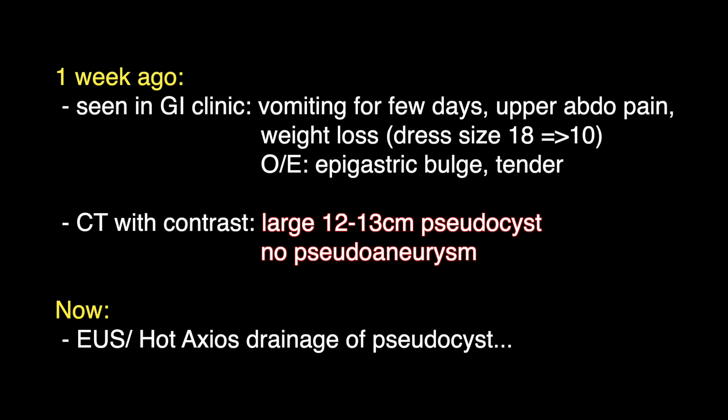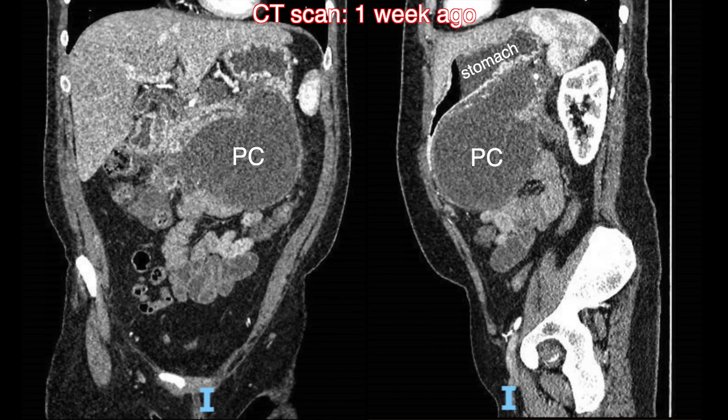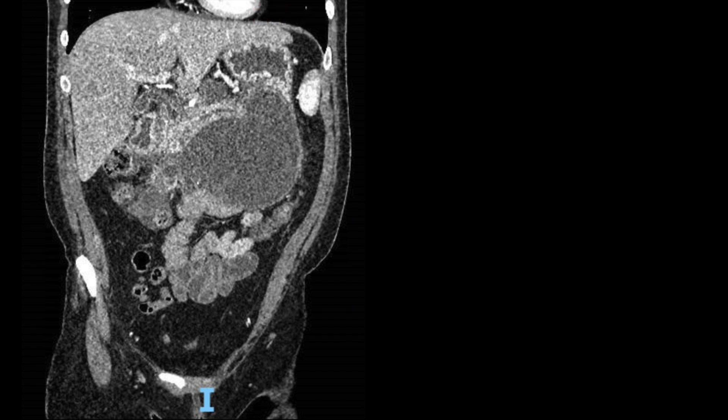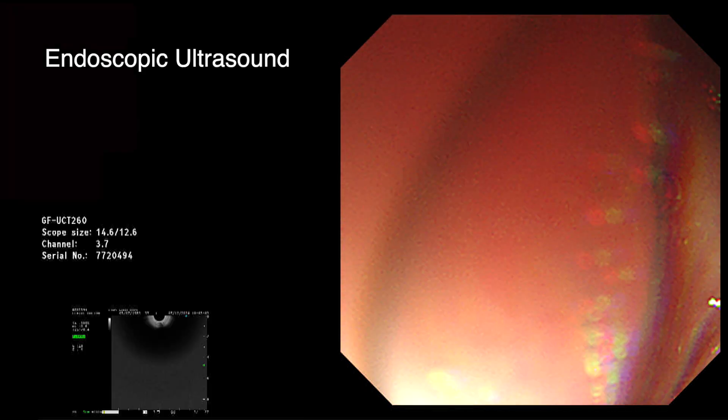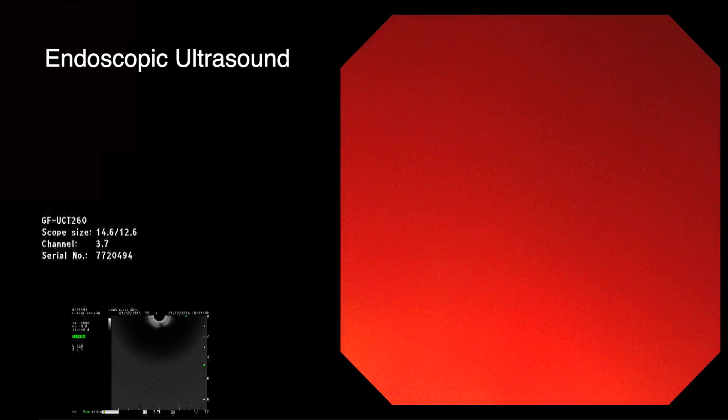A week ago she was seen in the gastroenterology clinic. She had been vomiting for a few days and there was upper abdominal pain. She had lost a considerable amount of weight and had dropped her dress size from 18 to 10. On examination there was a tender epigastric bulge. A CT scan with contrast was performed on the same day. This confirmed a large 12 to 13 centimetre pseudocyst compressing the stomach. There was no evidence of a pseudoaneurysm on the CT scan.